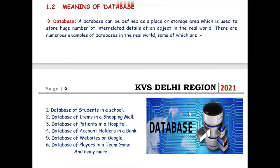We need a database to store the collection of data of various real-world entities — like students in a school, employees in a company, patients in a hospital, account holders in a bank, websites on Google, or players in a team. A database is a place where we store a huge amount of interrelated details of an object.